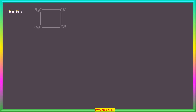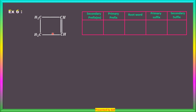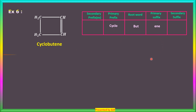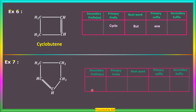Example 6: In this closed chain, there are four carbon atoms — root word is 'but'. There is a double bond, so the primary suffix is 'ene', and primary prefix is 'cyclo'. The name is cyclobutene. Example 7: Five carbon atoms in the ring — root word is 'pent', primary suffix is 'ene' because a double bond is there, primary prefix is 'cyclo'. Name: cyclopentene.